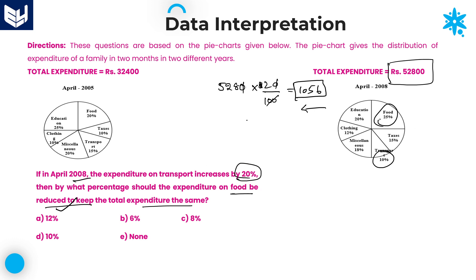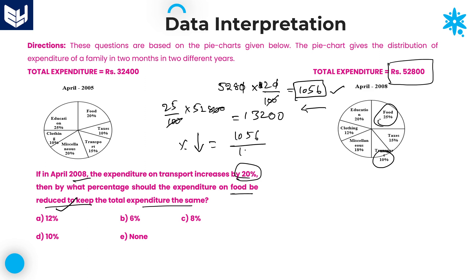Since we don't want to increase the total expenditure, food must be reduced by 1,056. Food is 25 percentage of 52,800. Cancelling two zeros: 25 into 528 gives 13,200. Percentage reduction equals 1,056 divided by 13,200 into 100. Cancelling two zeros: 1,056 divided by 132 equals exactly 8 times. So the food expenditure must be reduced by 8 percentage. Option C is the right answer.